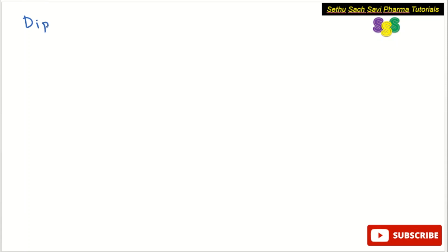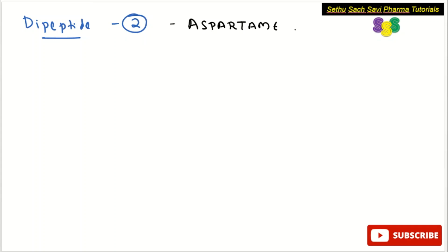Coming to important examples: for dipeptide, the number of amino acids is two. One important example is aspartame, which is an artificial sweetener — it is made up of two amino acids. Another example of a dipeptide is carnosine, which is an antioxidant and is also made up of two amino acids.